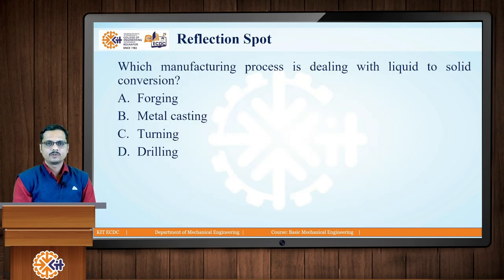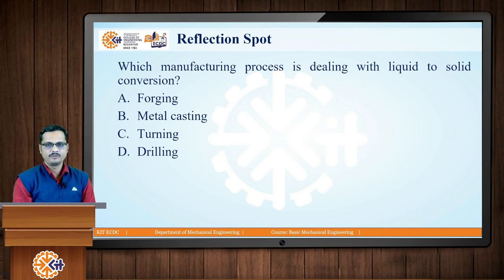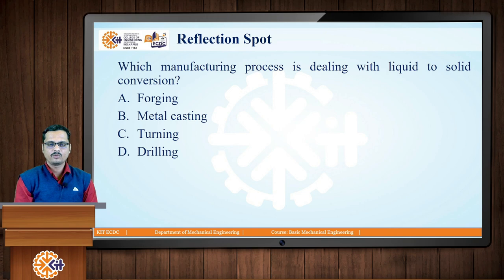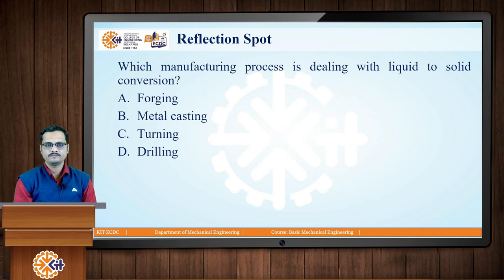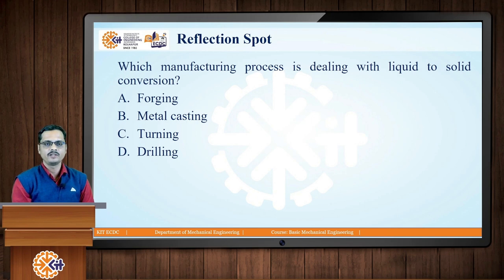Now, a reflection question to summarize: which manufacturing process deals with liquid-to-solid conversion? Option A is forging, Option B is metal casting, Option C is turning, and Option D is drilling. Please pause and think about your answer. The correct answer is metal casting, which deals with obtaining finished or semi-finished components through liquid-to-solid conversion — because we pour liquid molten metal into a mold cavity and after solidification, we get the casted components.